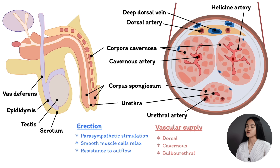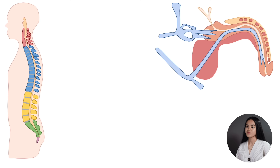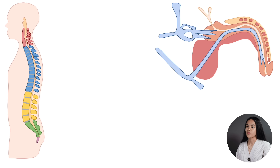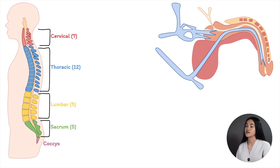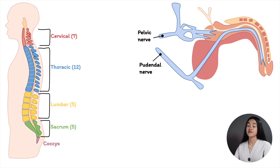Now let's move on to the neuroanatomy and physiology of erection. Let's do a quick recap on the vertebral column and its five different regions before we break down the afferent and efferent nerves. We have the cervical, thoracic, lumbar, sacrum, and coccyx. We also have the pudendal nerve, the pelvic nerve, and the hypogastric nerve.